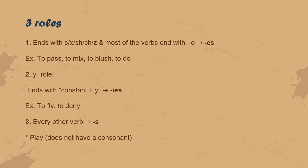The second rule is called the y-rule, and it states that when the verb ends with a consonant and -y, then you remove the -y, add an -i instead, and add -es. For example, the verb 'fly' becomes 'he flies', spelled f-l-i-e-s, or the verb 'deny' becomes 'he denies'.